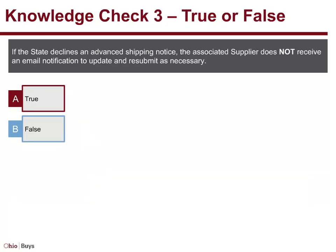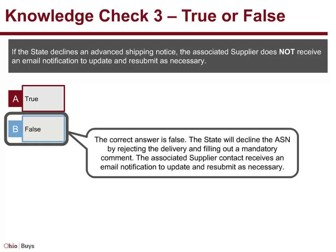Knowledge Check 3. True or False: If the state declines an Advanced Shipping Notice, the associated supplier does not receive an email notification to update and resubmit as necessary. The correct answer is False. The state will decline the Advanced Shipping Notice by rejecting the delivery and filling out a mandatory comment. The associated supplier contact receives an email notification to update and resubmit as necessary.